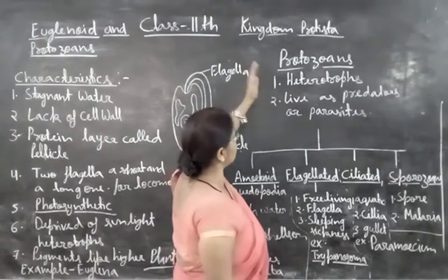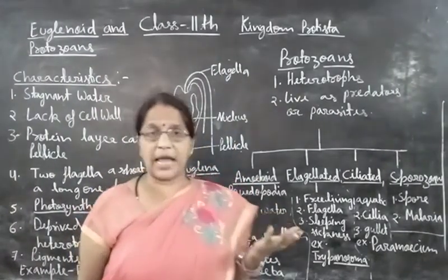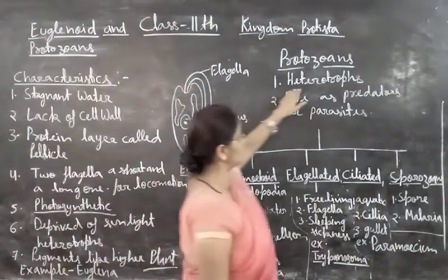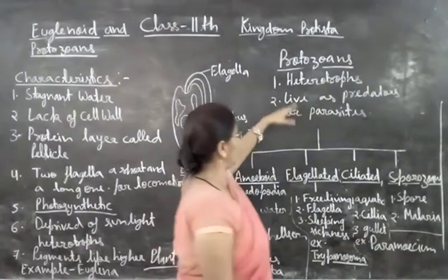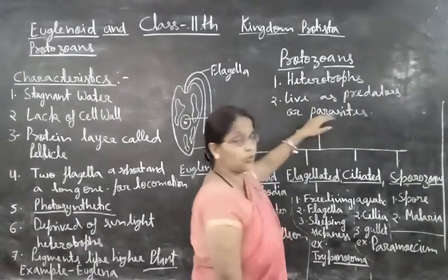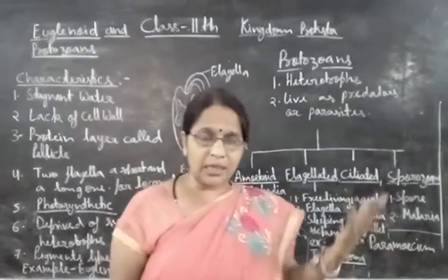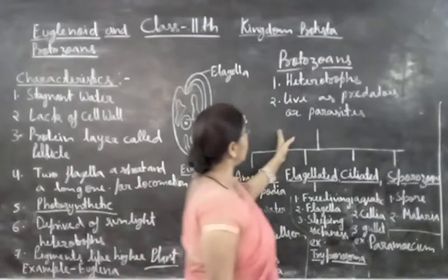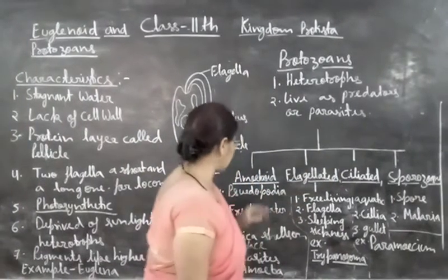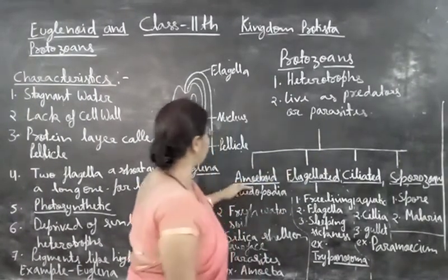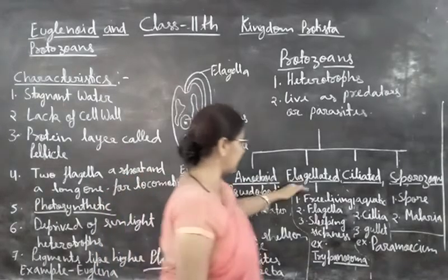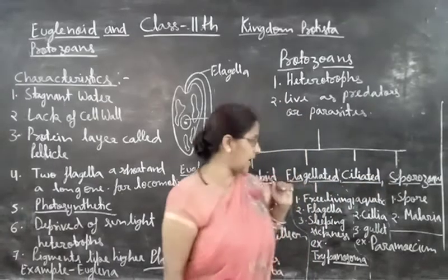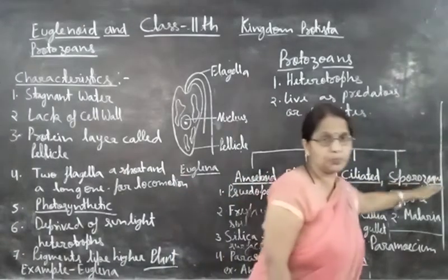Next, protozoans are animal-like because a cell wall is absent. They are heterotrophs like animals. They live as predators or parasites. So these protozoans are classified into four categories: first is amoeboid, second is flagellated, third is ciliated, and fourth is sporozoans.